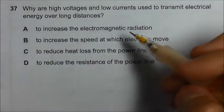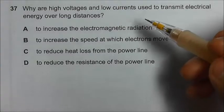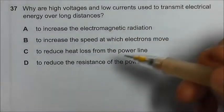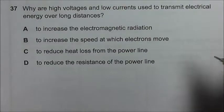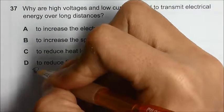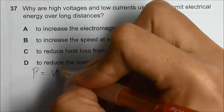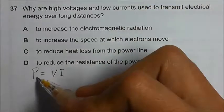Usually when we want to transmit electrical energy from a power station to our home, we will step up the voltage. The reason is very simple. Using the formula P equals VI, the power is constant.